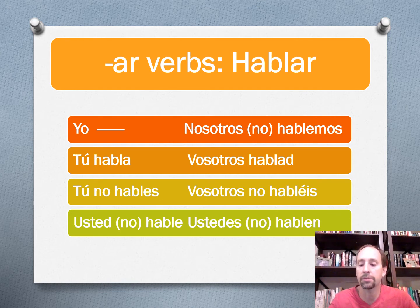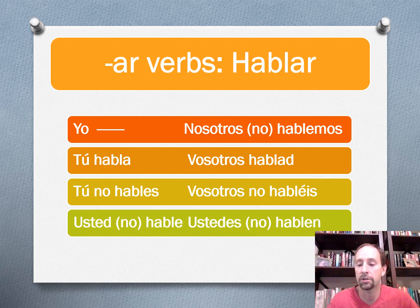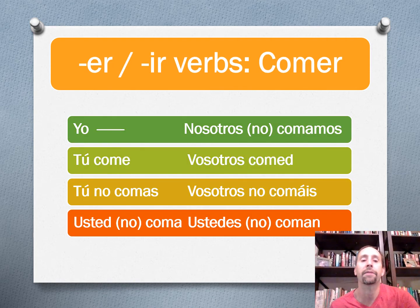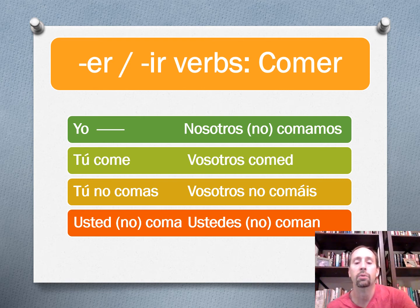Let's take a look at the ER verbs and that chart. Also notice that there's no command for the yo form — I can't command myself to do something, I just do it or don't do it. And just take a brief look at the verb chart for ER and IR verbs. So again, we've got two affirmative and two negative commands: ustedes, usted commands, vosotros, and nosotros commands.